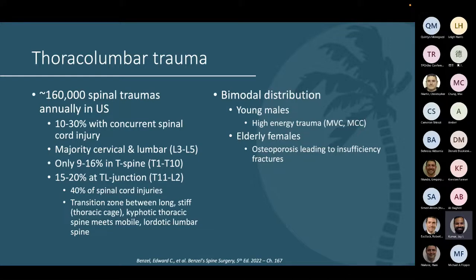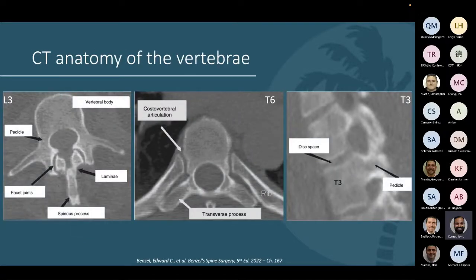This area has a much higher rate of spinal cord injuries, around 40 percent. The distribution of these injuries takes a bimodal shape: young males are more likely to experience high-energy trauma like motor vehicle and motorcycle collisions, while elderly females commonly have osteoporosis leading to insufficiency or fragility fractures. On CT, we can see the vertebral body, pedicle, joints, lamina, spinous process, transverse process constituting the posterior elements, the costovertebral articulation in the thoracic spine, and the disc space viewed on sagittal CT.